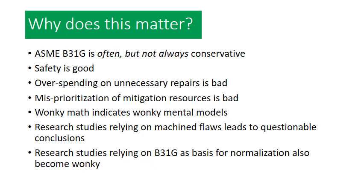I've also seen some research studies that rely on B31G as a basis of normalization to other data. If we know we've got some wonky mathematics in the model used for normalization, that's going to lead to some wonky conclusions potentially coming out of other research studies. So these are things we really need to think about — it's not just a matter of conservatism and saving money or spending money, it's a matter of how we're thinking about these various issues moving forward with industry research programs.